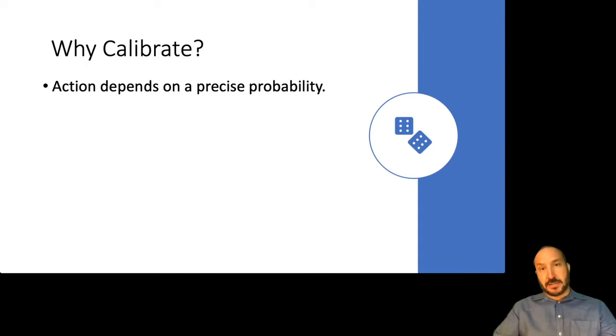Similarly, in insurance, if you were going to issue a bunch of insurance policies and you want to know the probability that someone's going to have a car accident, if you don't get those probabilities right, you're either going to pay out too much in claims, or if you overpredict the probability of an accident, you'll charge too much for the insurance and your product won't be competitive.